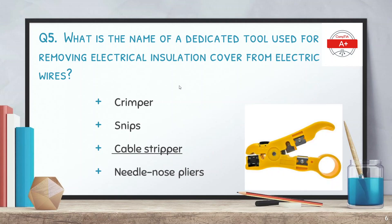Question 5: what is the name of a dedicated tool used for removing electrical insulation cover from electrical wires? The correct answer is cable stripper. This cable stripper is used to remove the insulation from the shielded twisted pair cable.